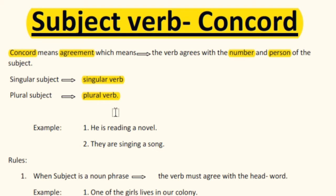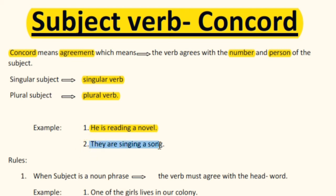Let's see through examples. 'He is reading a novel.' Here 'he' is the subject, which is in singular number, and the verb 'is' is also a singular verb. In example two, 'They are singing a song' — the subject is in plural number, so the verb 'are' is also in plural number.